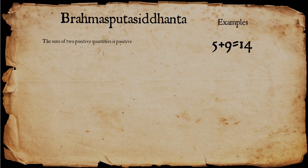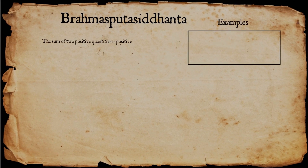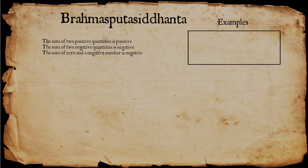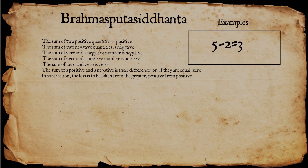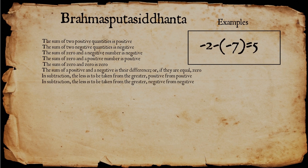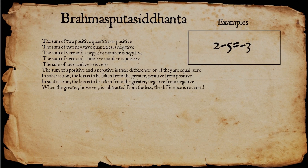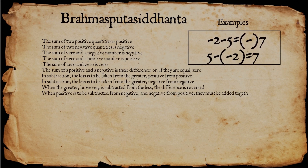He stated in his book: the sum of two positive quantities is positive; the sum of two negative quantities is negative; the sum of 0 and a negative number is negative; the sum of 0 and a positive number is positive; the sum of 0 and 0 is 0. The sum of a positive and a negative is their difference, or if they are equal, 0. In subtraction, the lesser is to be taken from the greater — positive from positive, negative from negative. When the greater is subtracted from the less, the difference is reversed. When a positive is subtracted from a negative or negative from positive, they must be added together.